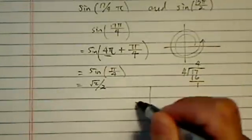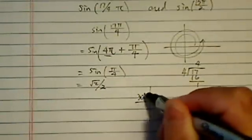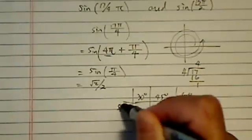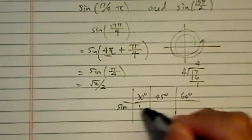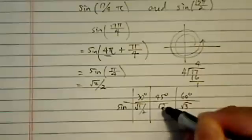Incidentally, there's a shortcut. If you have 30 degrees, 45 degrees, and 60 degrees, sine value is over here. You have 1, 2, and 3. Put a radical on it and divide it by 2.